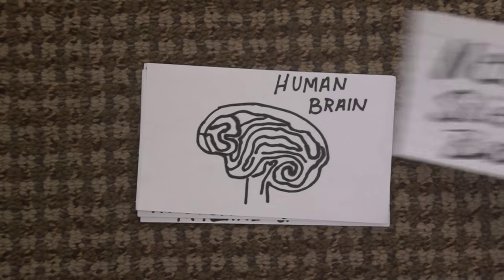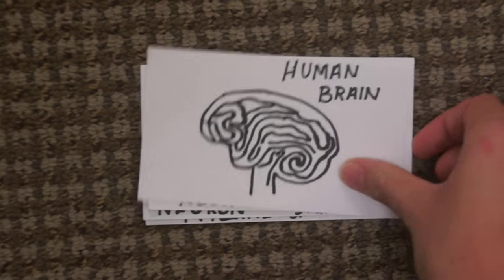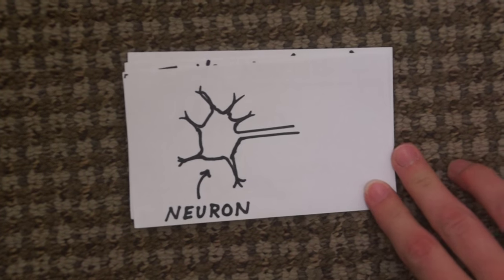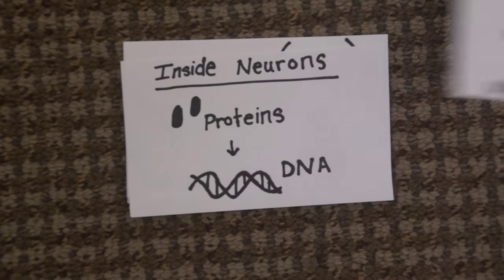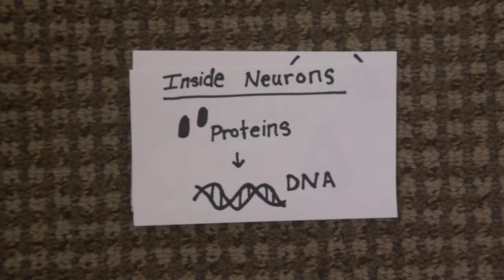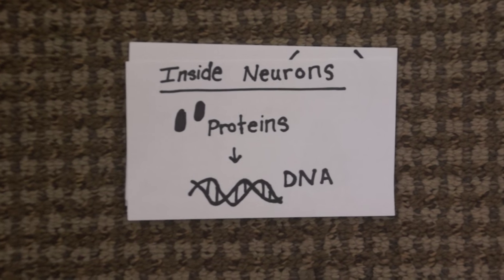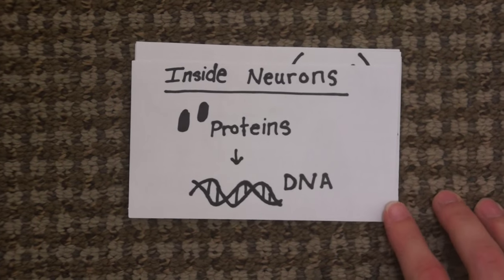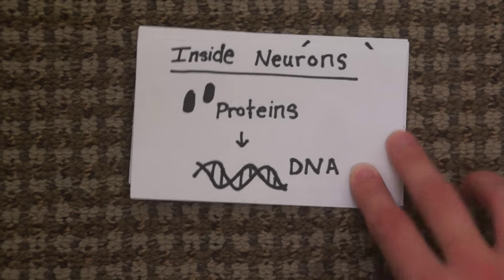Neuroscience basics. Inside the human brain there are billions and billions of neurons. Inside the neurons there are about hundreds of thousands of proteins, and the proteins are made up of about 20,000 DNA.